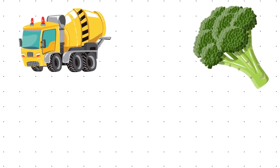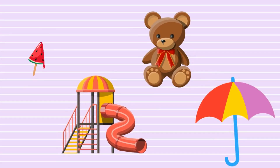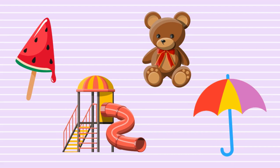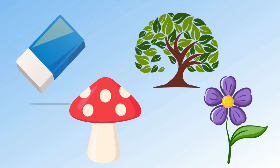Bang scale. Here is the circle shape object. Very good. Dot board. Here is the triangle shape object. Well done. Ice cream. Here is the oval shape object. Very good. Mirror.